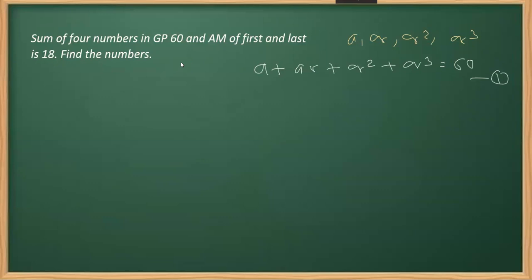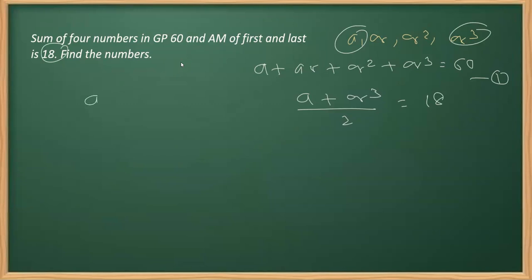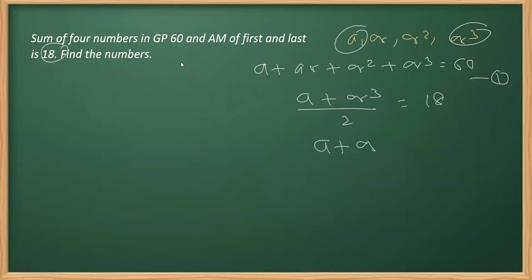The second part says the arithmetic mean of the first and last term is 18, so (a + ar³) / 2 = 18. The arithmetic mean of two numbers is the sum of the two numbers divided by 2. Using this formula, we get a + ar³ = 36, which we call equation two.